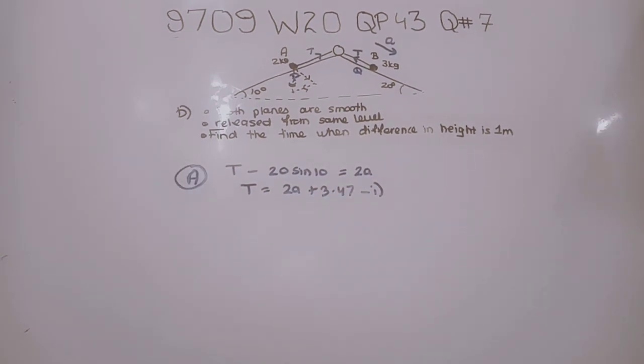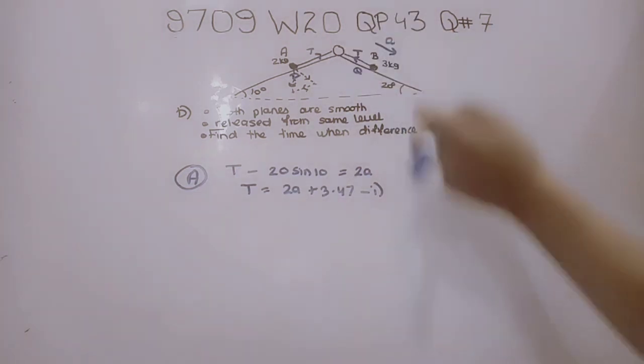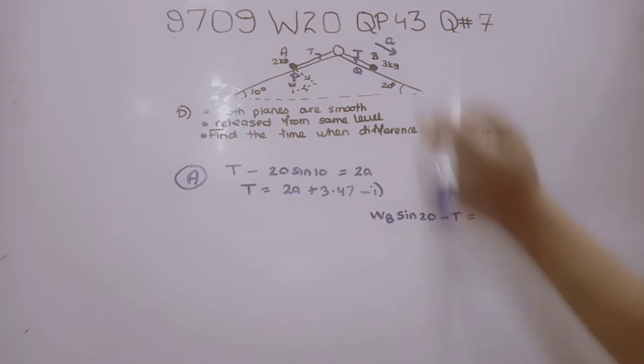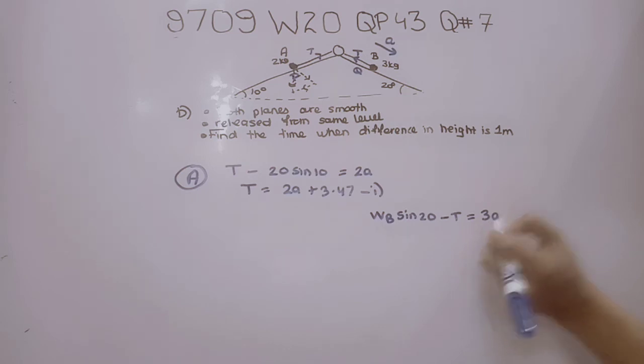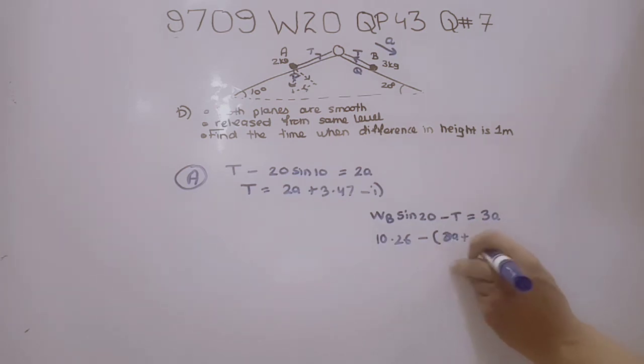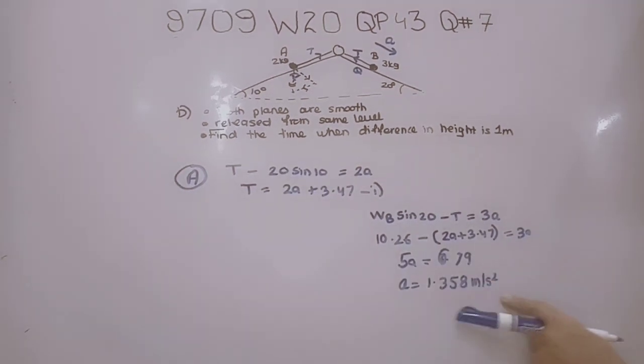Considering particle B, the weight component WB sin 20 minus the tension equals mass times acceleration, which is 3A. So WB sin 20, which is 10.26, minus T equals 3A. Substituting T gives 10.26 minus 2A plus 3.47 equals 3A.